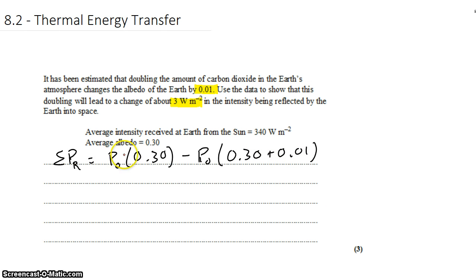From the algebra here, you can see that P0 times 0.3 and P0 times 0.3 cancel, leaving behind P0 times 0.01. The negative sign doesn't really work out, but that's okay. It's just a change.